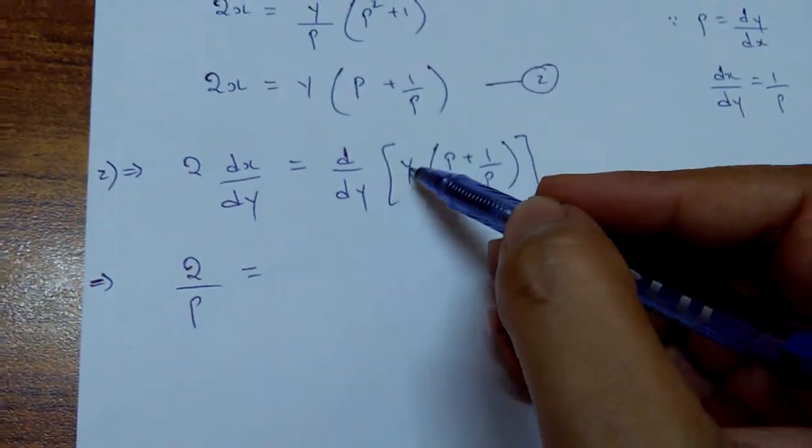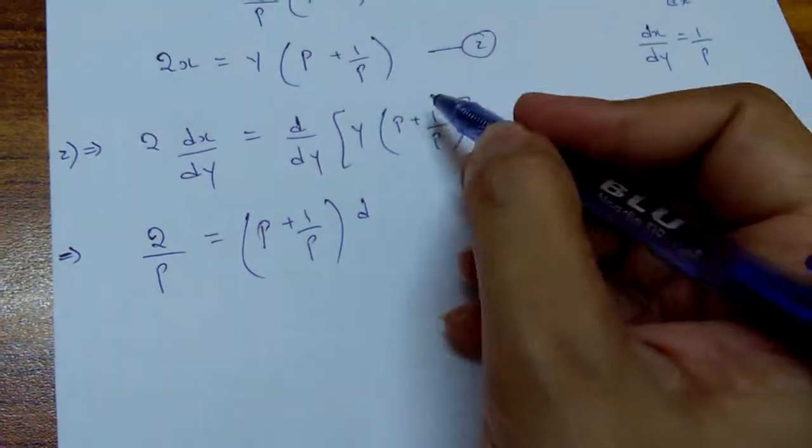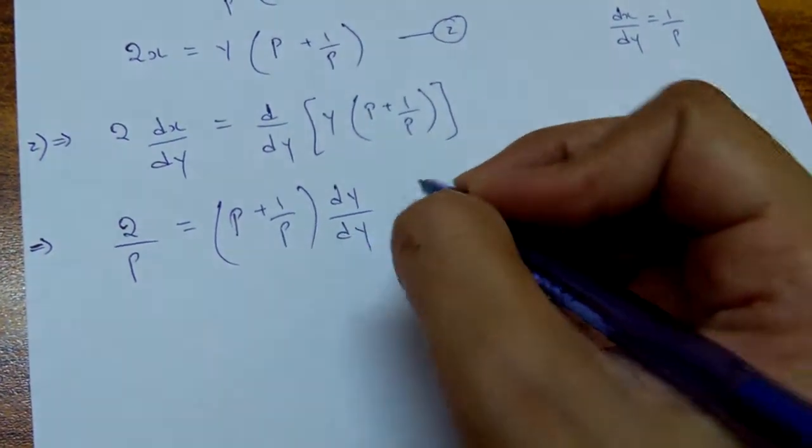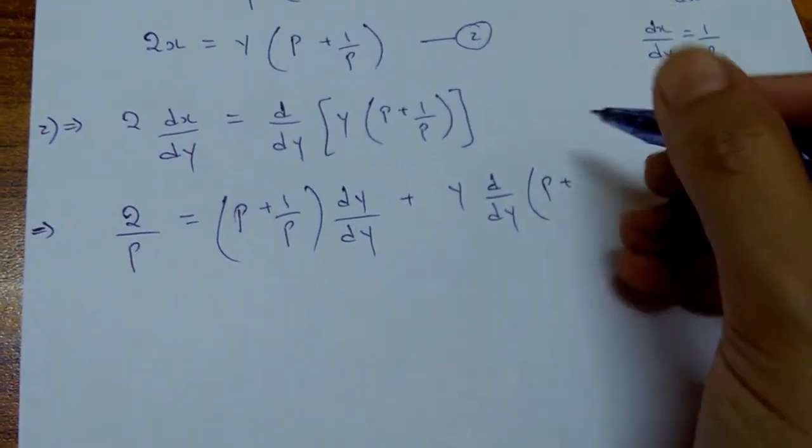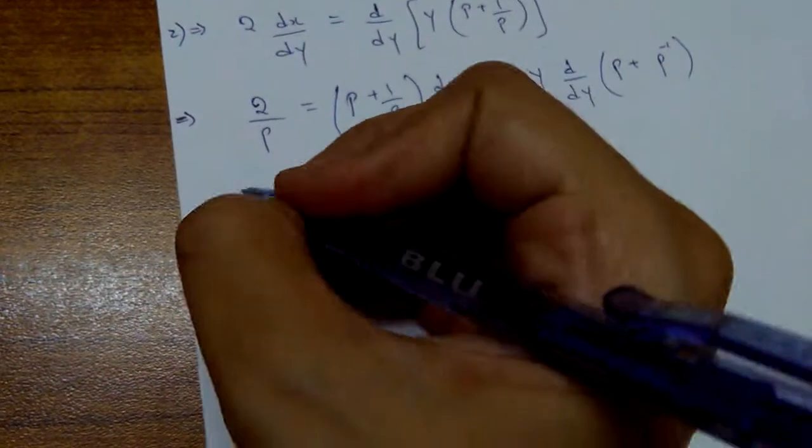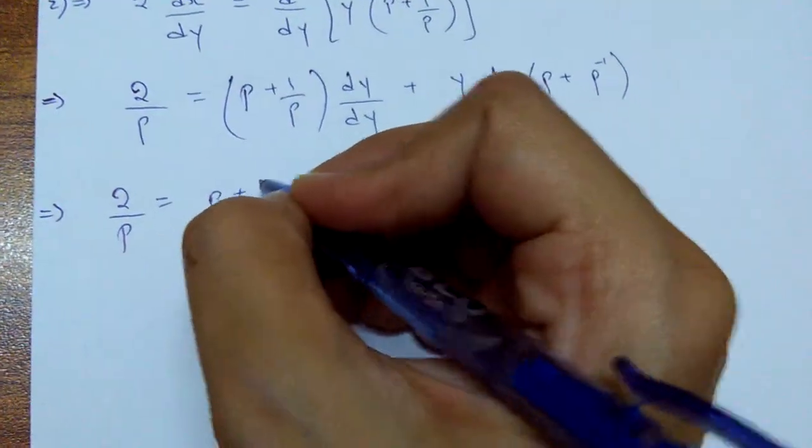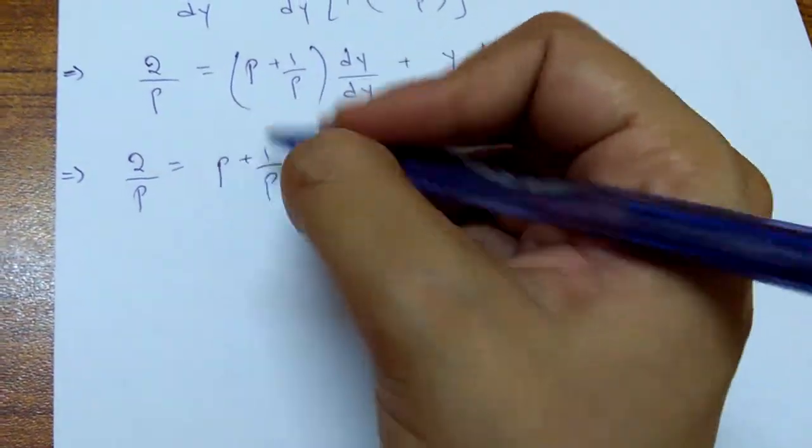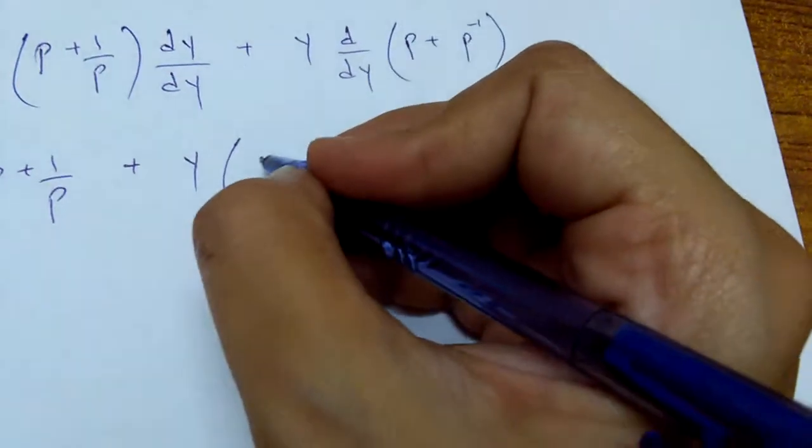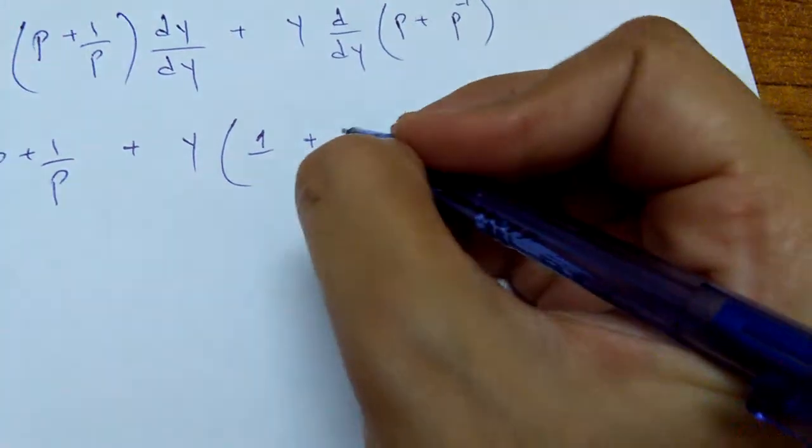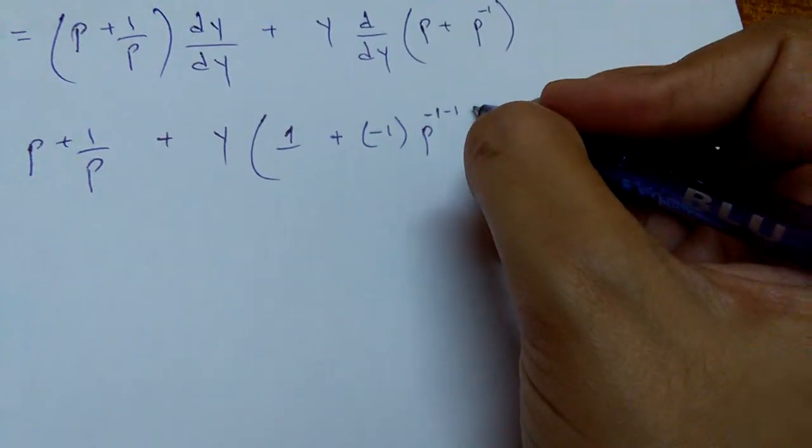Now, let us apply the derivative of product of two functions. So, we just keep the second function constant, write the derivative of your first function. Then keep the first function constant, write the derivative of your second function. I can write this one upon p as p power negative 1. That's easier. So, this thing is 1, so that's what is left. And then y times derivative of p is 1, and derivative of p power minus 1 can be written like this. We are going to use the formula of x to the n.